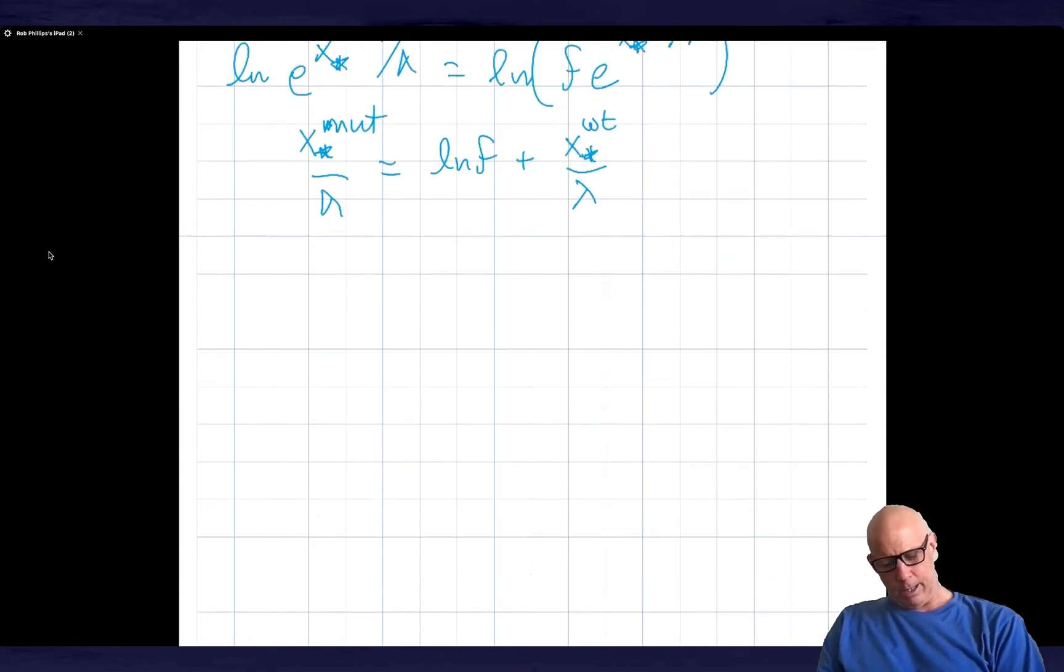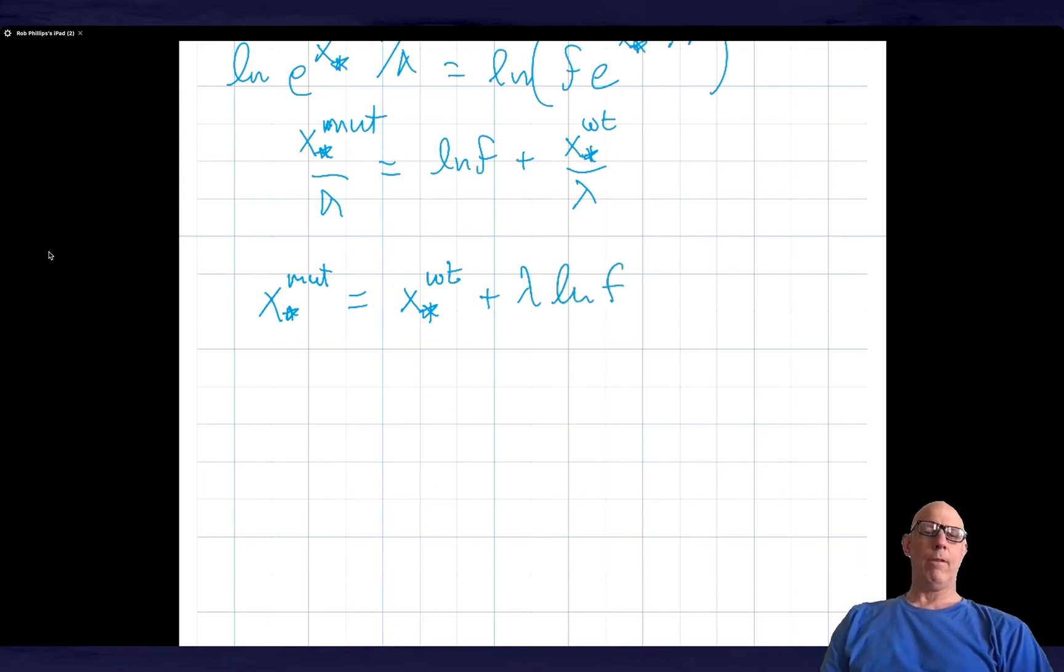I can simplify that to x star mutant is equal to x star wild type plus lambda times log of f where f is the gene dosage.